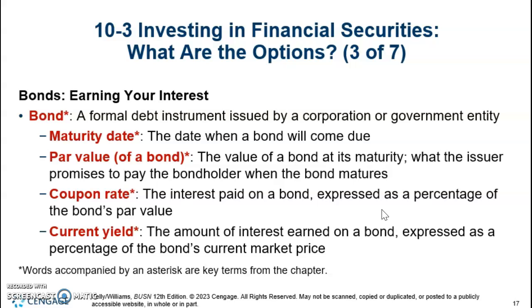If a corporation defaults on a bond, the only way to try to recover that is through bankruptcy procedures, and recovery is not guaranteed, so there is some risk. Bonds can also be sold to other investors before the maturity date, and the price may not equal the bond's par value — it may fluctuate based on the market. If the market price is above the par value, bonds can be sold at a premium. If the market price is lower than the par value, they may have to lower the price, which is called a discount.